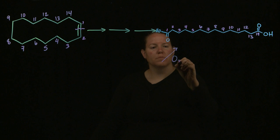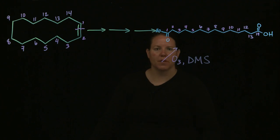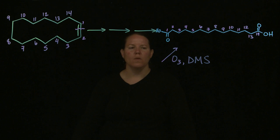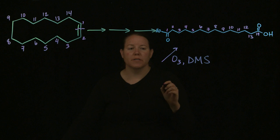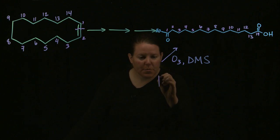So here's my ozone reaction: O3 and DMS, dimethyl sulfide. In terms of looking at this, I could get from something to here if I was able to cut that double bond, and the only way I can cut that double bond and result in two carboxylic acids is if I had a triple bond right there.